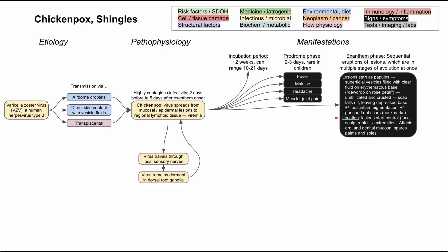In terms of location, the lesions start in the central body — the face, scalp, and trunk — and then progress to the extremities. They tend to affect the oral and genital mucosa as well, and they tend to spare the palms and soles. If you have lesions on the palms and soles, you might suspect another viral infection.